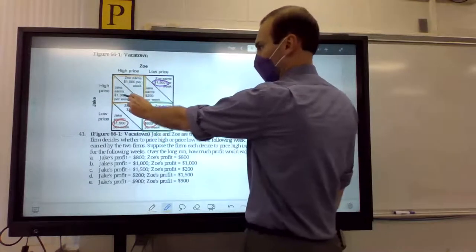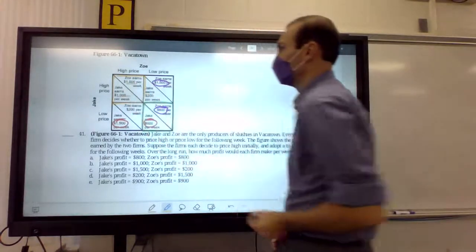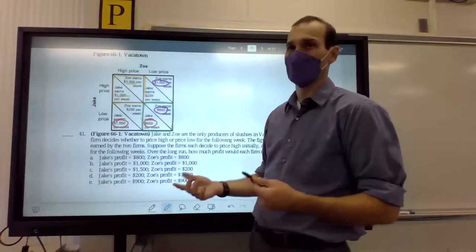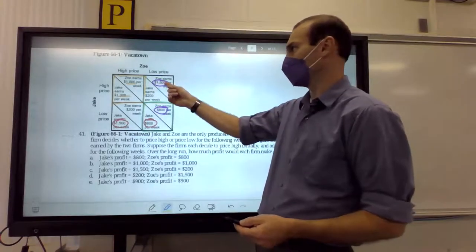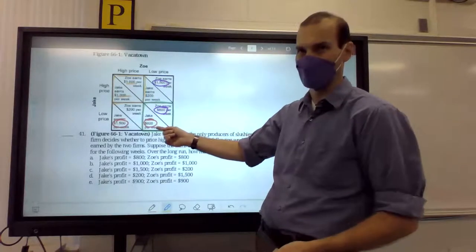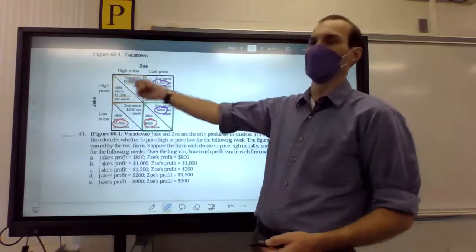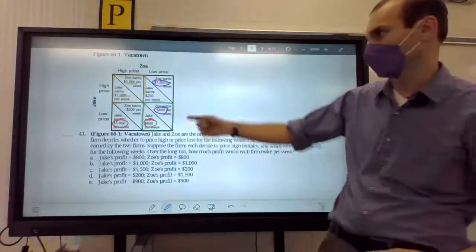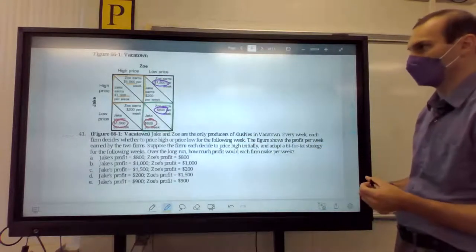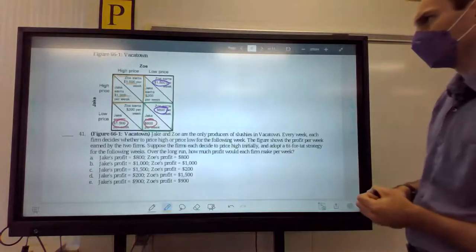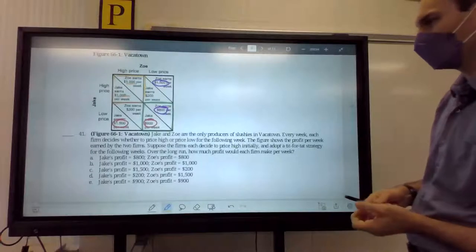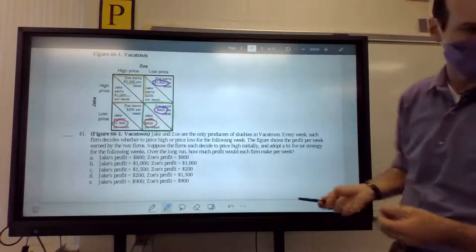So, our Nash equilibrium will be right here. But what is our profit-maximizing equilibrium? That's going to be up here at $1,000 to $1,000. So, this is $800, $800, $1,000, $1,000. So, they say they both set a high price, but Zoe and Jake will want to cheat. So, Zoe cheats, sets a low price, makes $1,500 per week. Jake only gets $200. So, then Jake will return the favor and cheat, and they end up at the Nash equilibrium. And that cycle would essentially continue because then they go, hey, let's collude again. This says, over the long run, how much profit would each firm make per week?